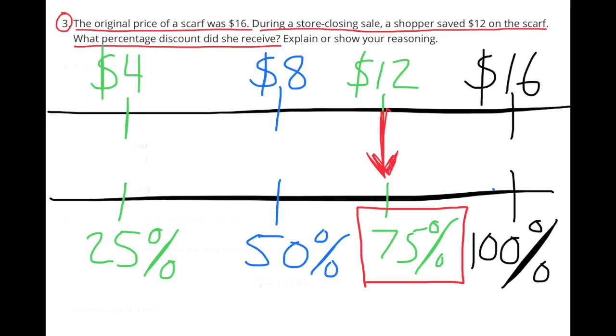Since 12 is a multiple of 4, I decided to divide 16 by 4, and since I divided 16 by 4, I have to divide 100% by 4. So on the left-hand side, $4 represents 25%. On the top I count by 4, and on the bottom I count by 25%. $12 is 75% of $16, so the shopper saved 75%.